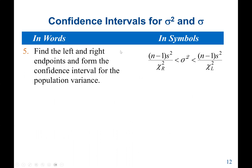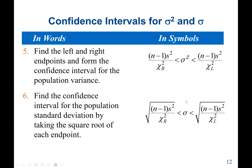Then find the left and right endpoints and form the confidence interval for the population variance: (n minus 1) times S squared over chi-square R is less than the population variance, which is less than (n minus 1) times S squared over chi-square L. For the population standard deviation, take the square root of each endpoint of the variance confidence interval.